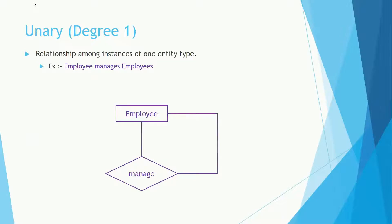This is a unary relationship type. The example here is the employee-manager relationship: an employee is managed by another employee. The employee entity type is involved in the 'manages' relationship type — this is called a unary relationship, where only one entity type is involved.